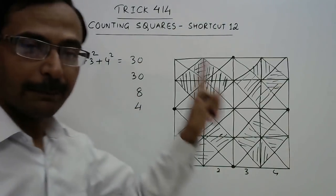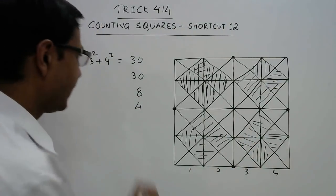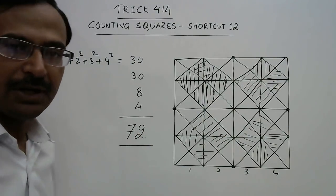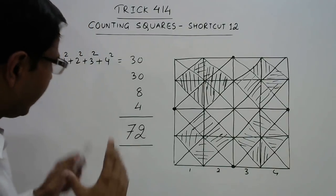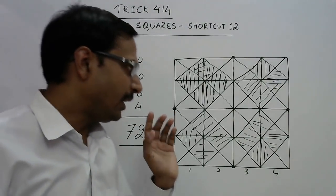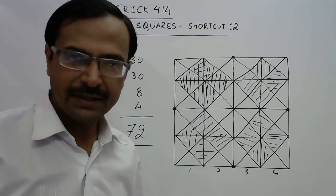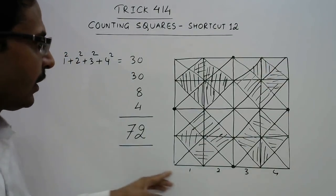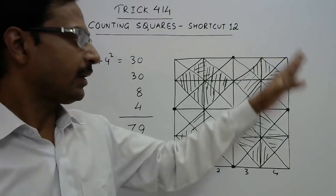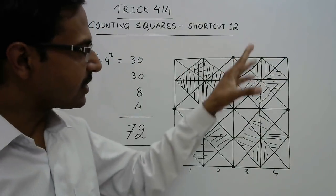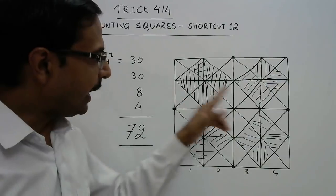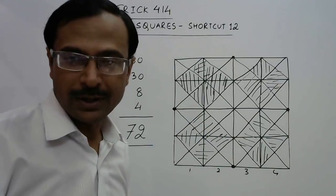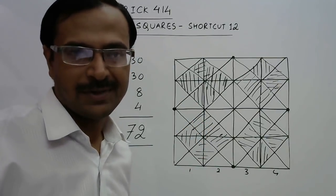Now we have completed all the squares in this figure. The resulting answer is 72 squares. Students, we need a little bit of understanding — there is a trick when finding the total number of squares made by vertical and horizontal lines, which gives 30. Knowing the shortcut saves a lot of time compared to counting all 30 squares manually.